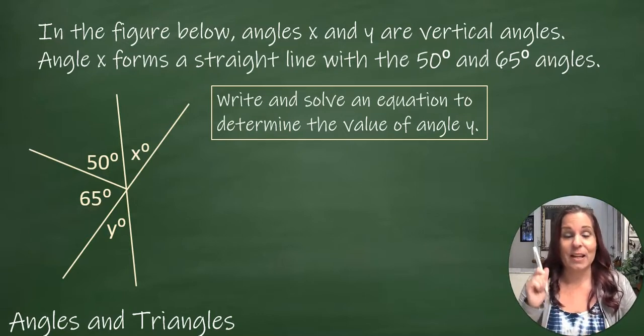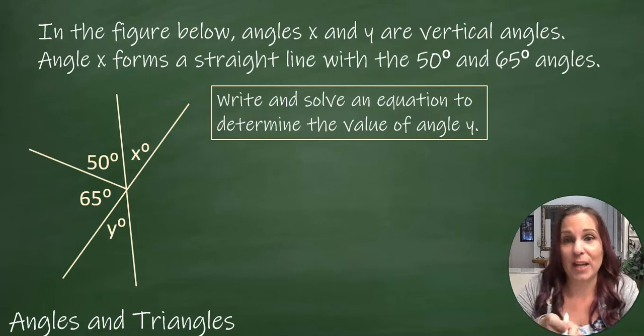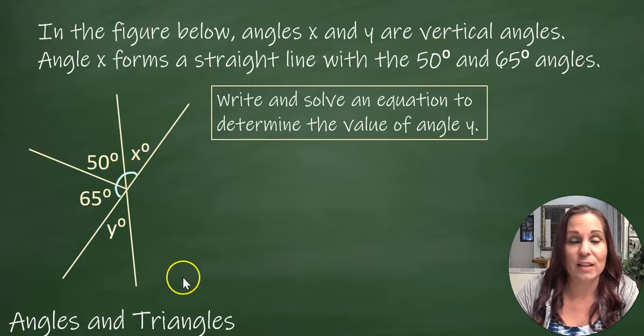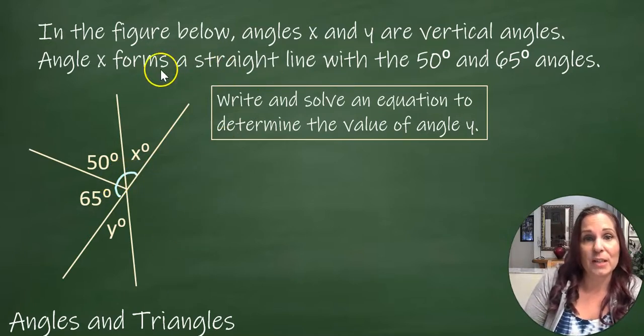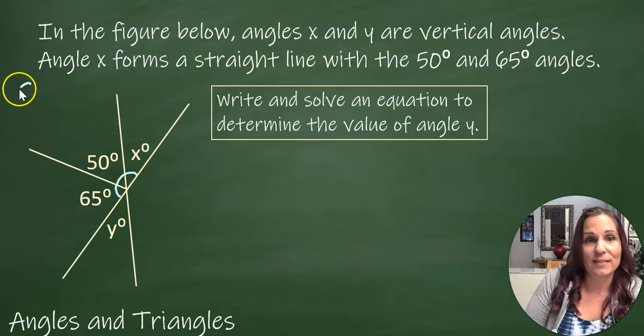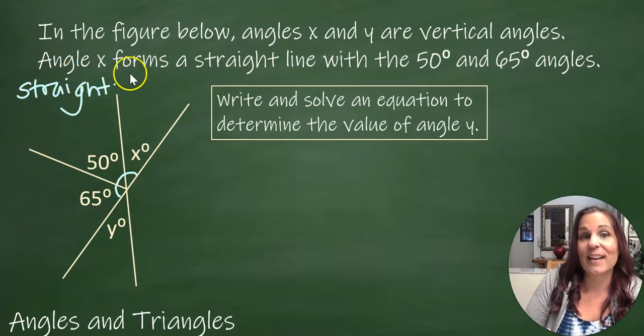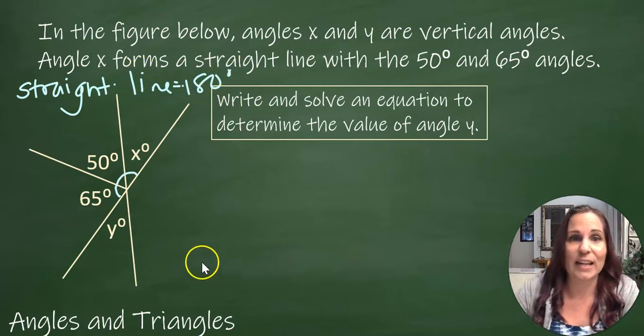Angle X forms a straight line with the 50 and 65 degree angles. Let's talk about what that means. Angle X forms a straight line with the 50 and 65 degree angles. So we've got this is a straight line. How many degrees is a straight line? 180, right? 180 degrees.